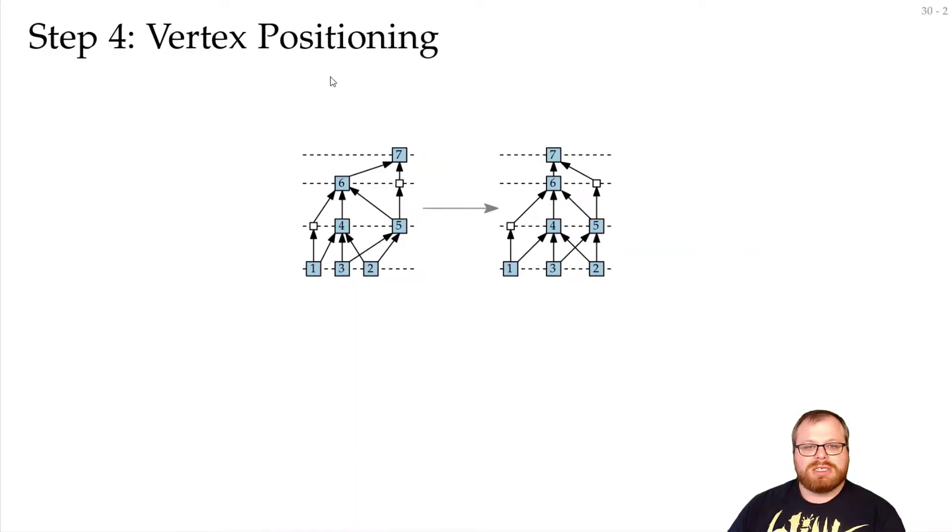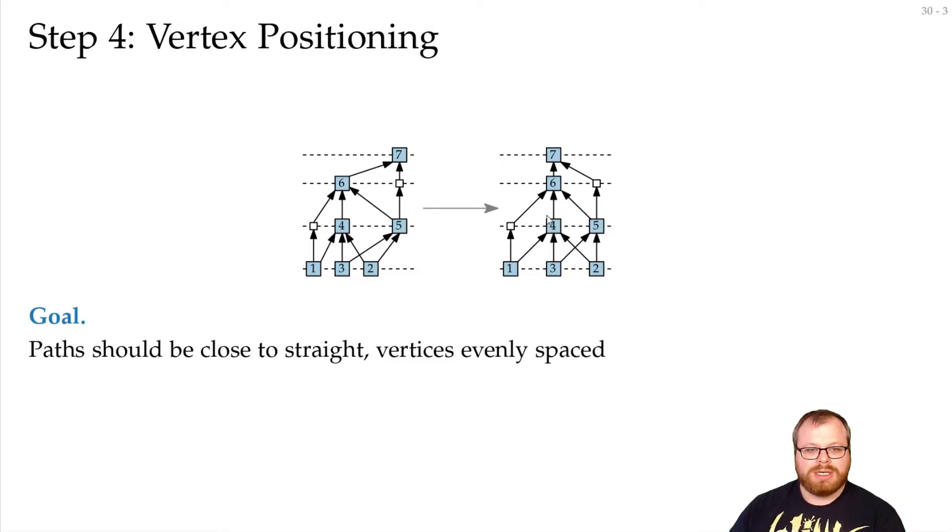The input is our layered graph with the assignment of the layers and the order, and we want to find the x-coordinates here. And the goal is, the path should be close to straight, so we don't want to have too many bends here, and we want the vertices to be evenly spaced.